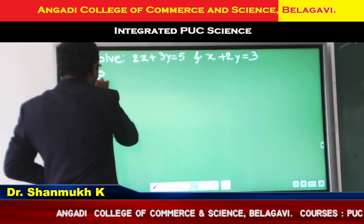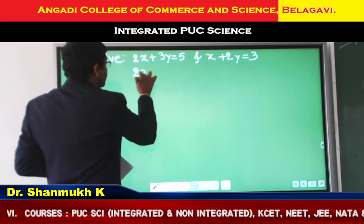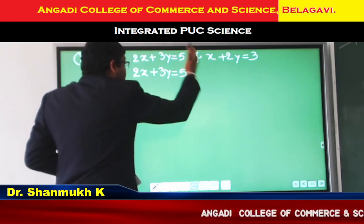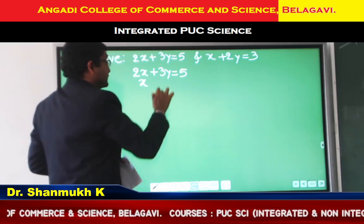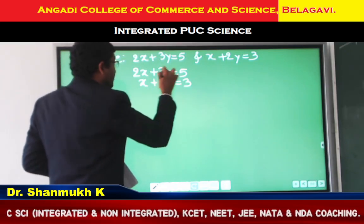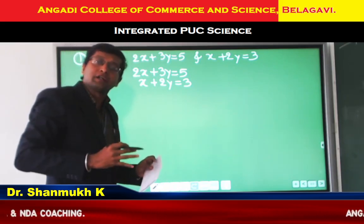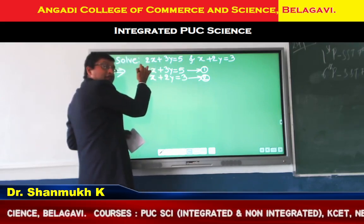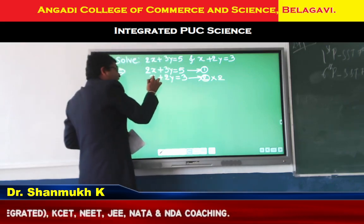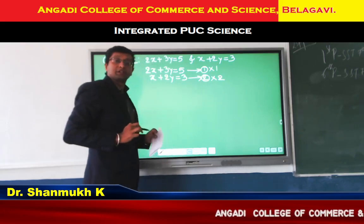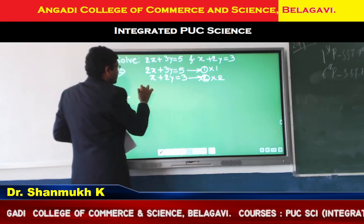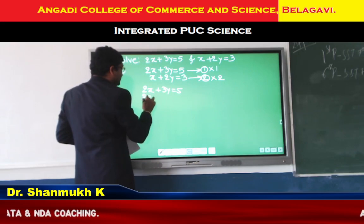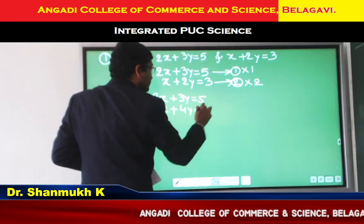This is a system of two linear equations. We write one below another: 2X plus 3Y equal to 5 as the first equation, and X plus 2Y equal to 3 as the second equation. We eliminate either X or Y. The first equation's X coefficient is 2 — multiply it with the second equation. The second equation's X coefficient is 1 — multiply it with the first equation. So 1 multiplied with the first equation gives 2X plus 3Y equal to 5, and 2 multiplied with the second equation gives 2X plus 4Y equal to 6.